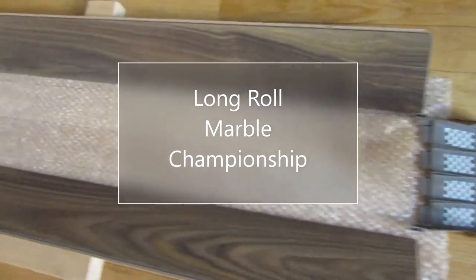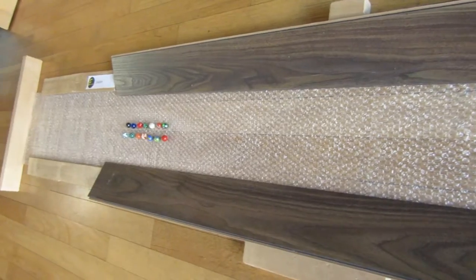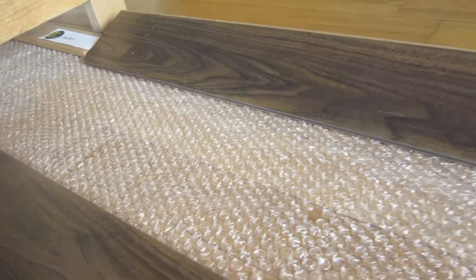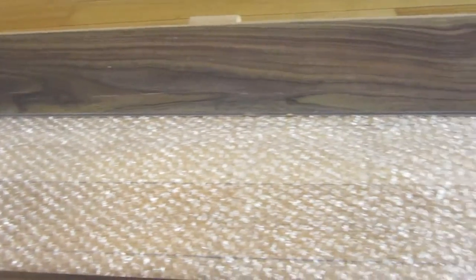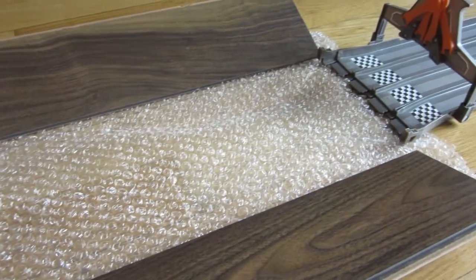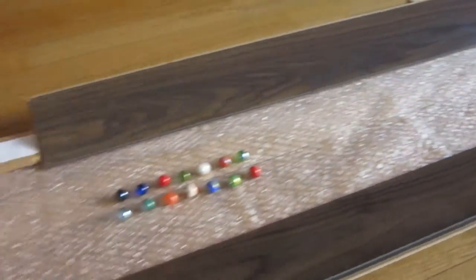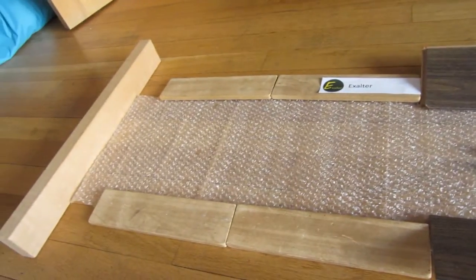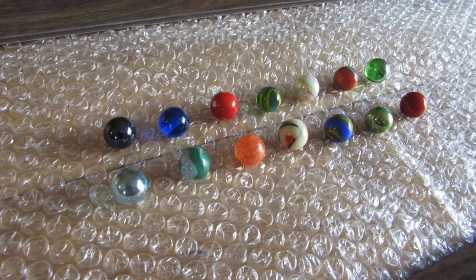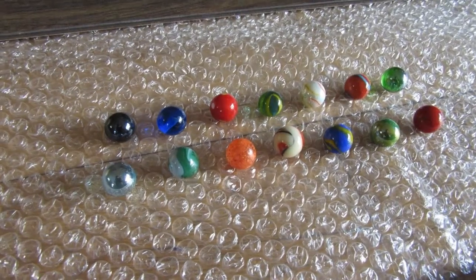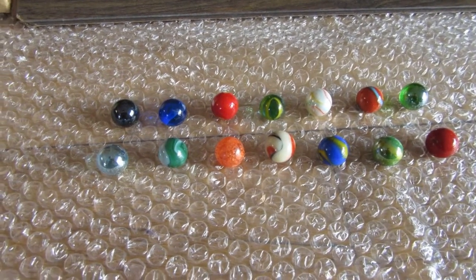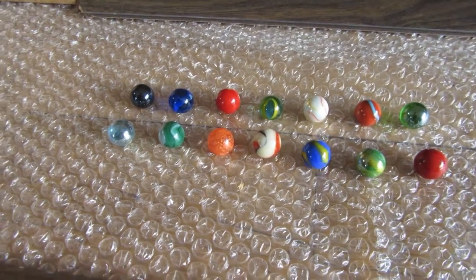Ladies and gentlemen, welcome to the Long Roll Marble Championship. 14 marbles will compete to get the farthest down this stretch of bubble wrap. Should be a pretty interesting race. We're going to start off with a qualifying run where all 14 marbles will be put down the track at the same time. Whoever gets the farthest will get to go last, and whoever goes the least farthest gets to go first. So, here's the run.